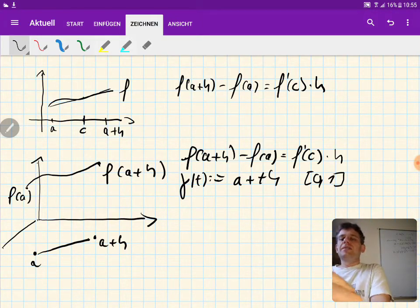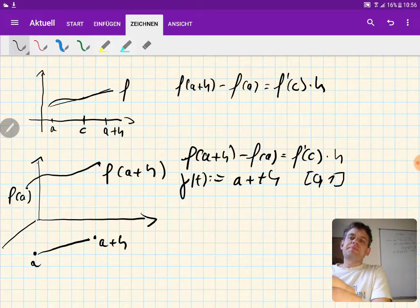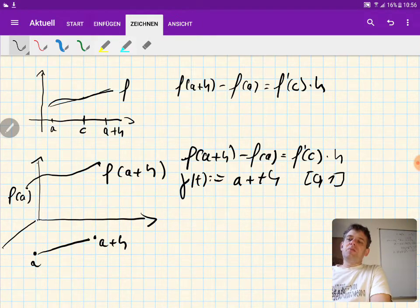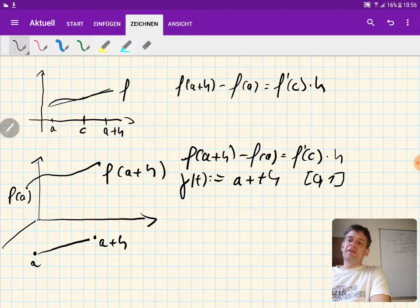So what this does is, if you plug in zero here you get a. If you plug in a value t between zero and one, you are somewhere on this line from a to a plus h, maybe here, and if you plug in one you go all the way to a plus h.